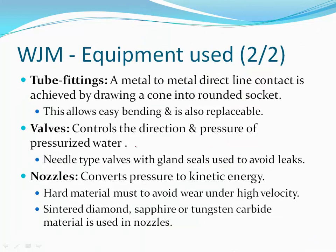Tube fittings achieve metal-to-metal direct line contact by drawing a cone into a rounded socket. The metallic rings fit into each other such that relative motion is possible between rings. When these rings are continuously connected one after another, it is possible to move the tubing just like a snake — you can bend it into any shape.